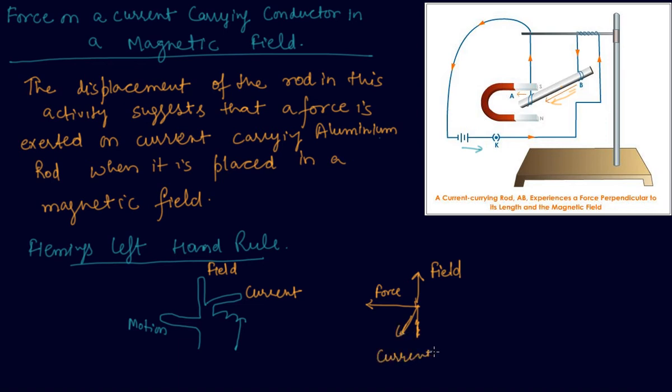This is carrying current. You can check the direction of the force by using Fleming's left hand rule. Let's say if the field is in, let's say this is y direction y axis and this is x axis, the force will be exerted in z axis.